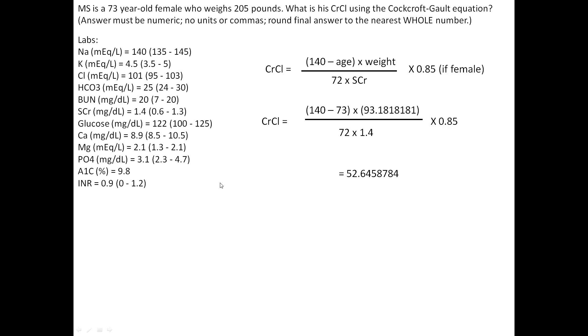Calculated creatinine clearance is 52.6458784. Remember to keep as many decimal places as possible until the end. Question says to round final answer to nearest whole number, so my answer is 53.